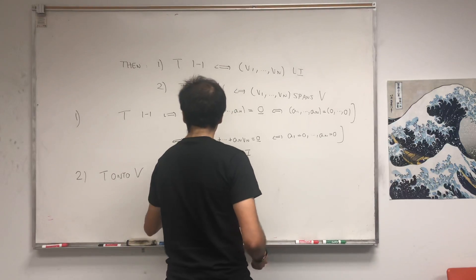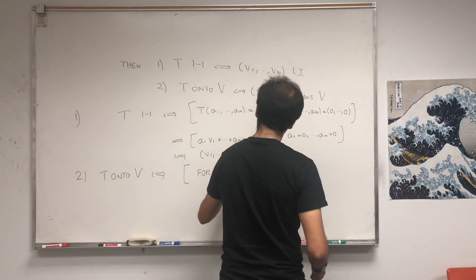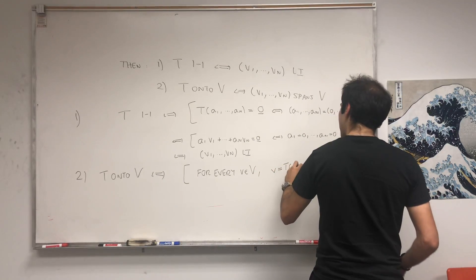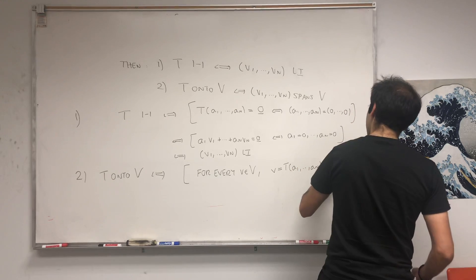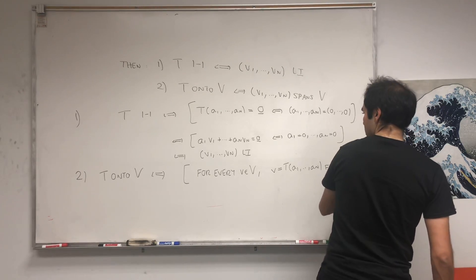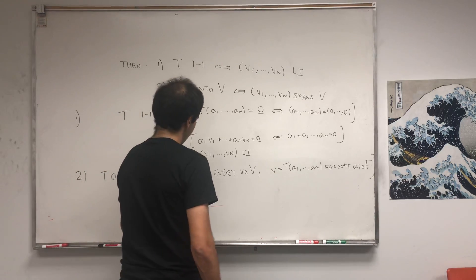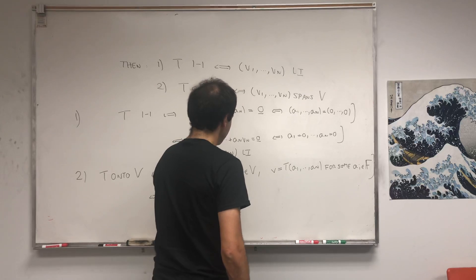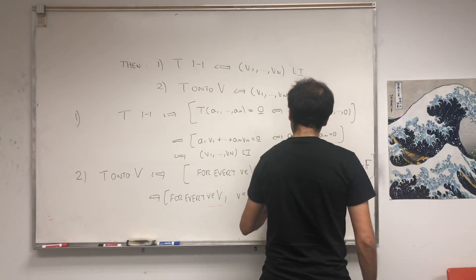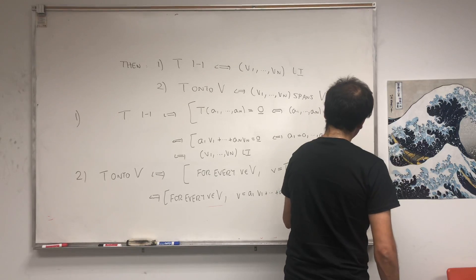If and only if, let's see, it means that for every v in v, v is t of something, a1 up to an for some ai in your field. And by definition, it means for every v in v, v is a1 v1 plus dot dot dot plus anvn for some scalars in your field.